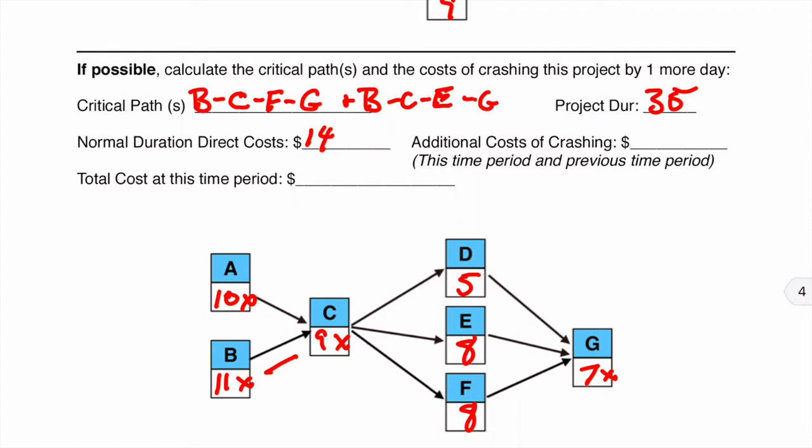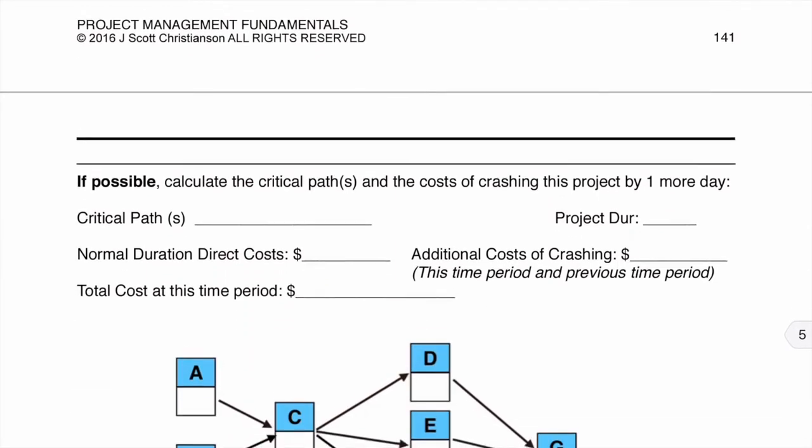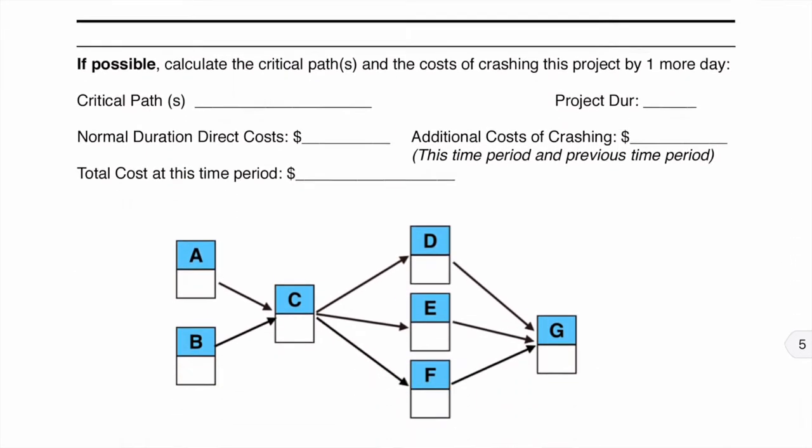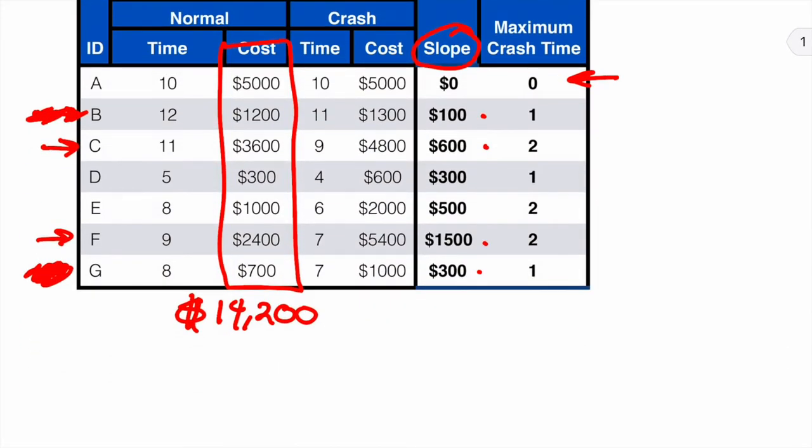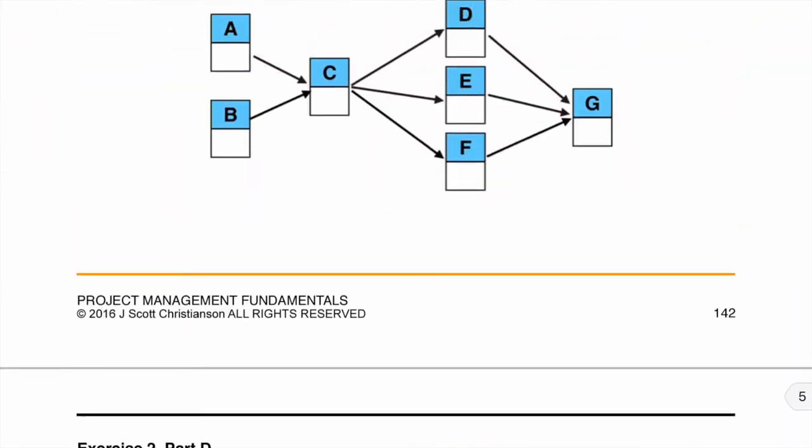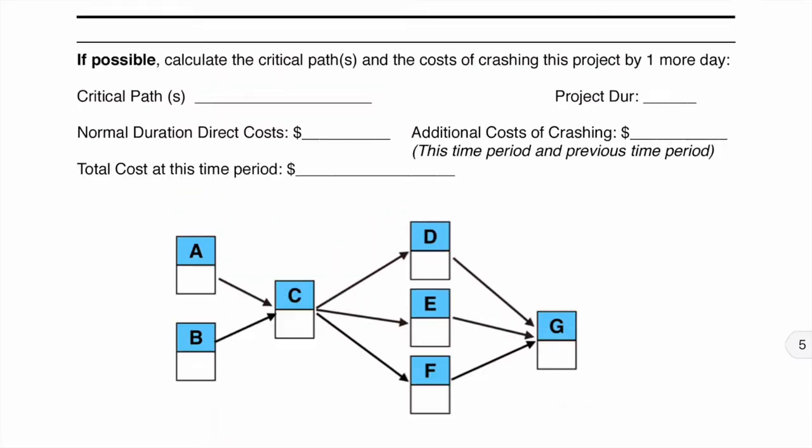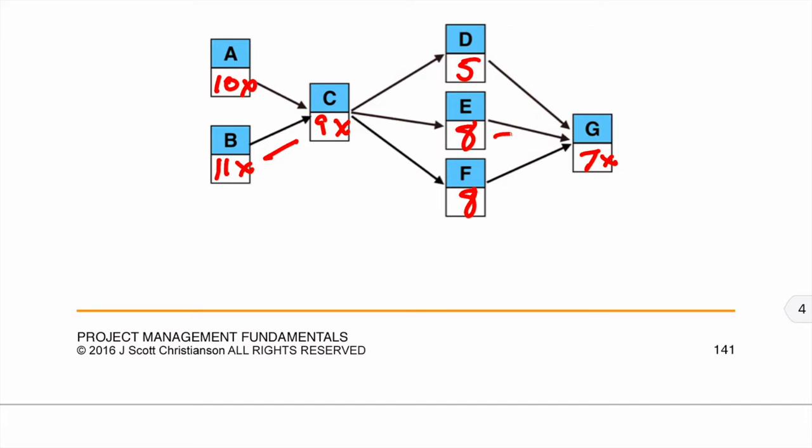Our original cost is $14,200. Our additional cost of crashing, we had $100 for B, then we had $300 for G, then we had $600 for C, and then we had another $600 for C, and then this last one we had $1,500 for F. So we are now at $17,300. If possible, calculate the critical path and cost of crashing by one more day. Well, can we do it by one more day? Well, we know we can crash F by one more day. That would be $1,500. Can we crash E? Yes, E can be crashed for $500. So we can, in fact, crash this one more day. But we are going to have to crash both E and F if we are going to get this down. So notice that we are going to have to do both of these, because if we just do one, then we will still be stuck here at 35 days.